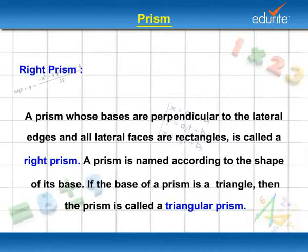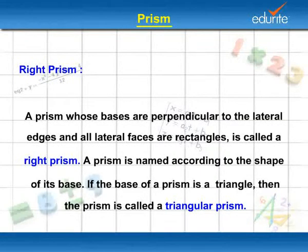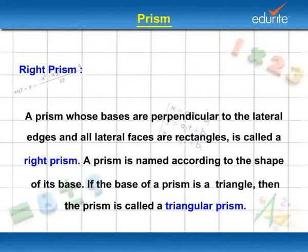A right prism is a prism whose bases are perpendicular to the lateral edges and all lateral faces are rectangles. A prism is named according to the shape of its base.